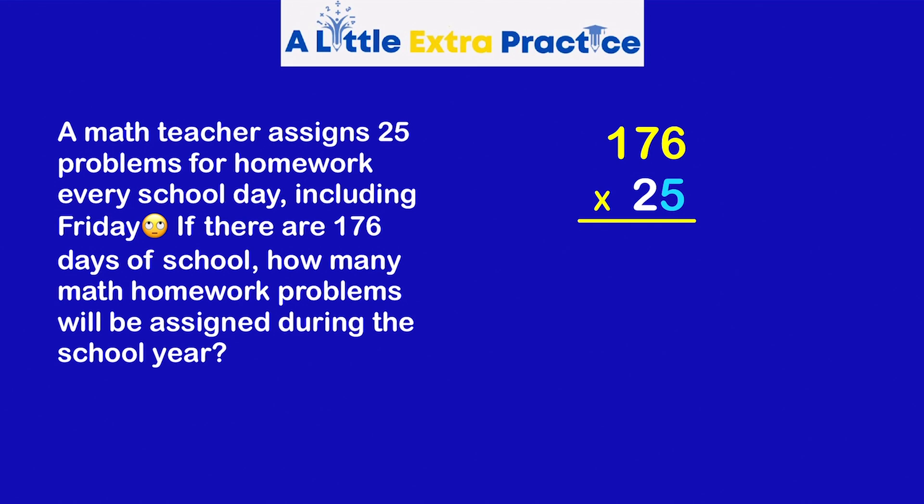The 3-digit number is on top. The 2-digit number is on the bottom, making it much easier. First, I will take the 5 times 176.